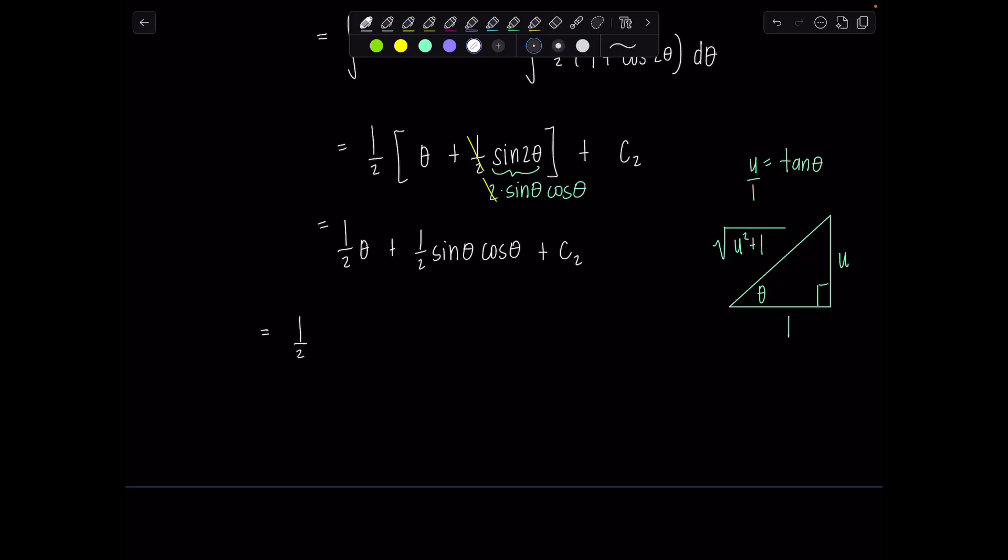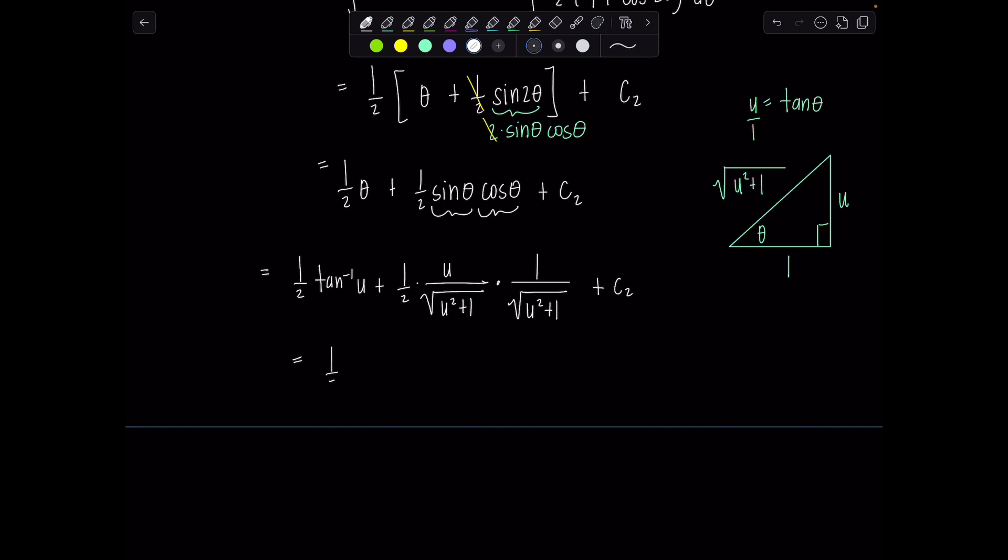And then we can use our triangle and get back to the original variable. So one half, when you have that plain old theta, you go back to, well, what trig function did I choose for my trig sub tangent theta? So theta all by its lonesome would be tan inverse of u plus one half. Okay. Now sine theta, use your triangle. It's going to be opposite over hypotenuse. So that'll be u over rad u squared plus one. And then cosine theta, again, use the triangle ratio of adjacent, which is one over hypotenuse. That's rad u squared plus one plus c2. Okay, good. So then from here, if we clean up a little bit, this is one half tan inverse of u plus one half u over, notice those radicals will cancel out. This is just u squared plus one plus c2.